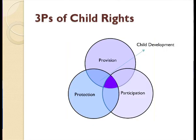Let's understand how children's rights are ensured through the three Ps of child rights: provision, protection, and participation. If all three things are provided, there are few reasons that child rights won't be ensured to children.